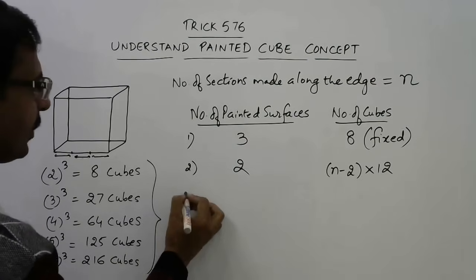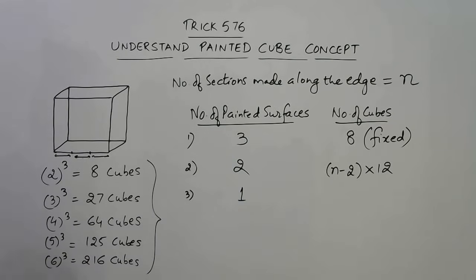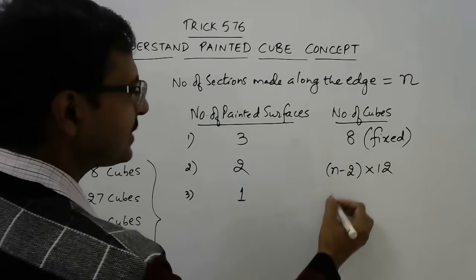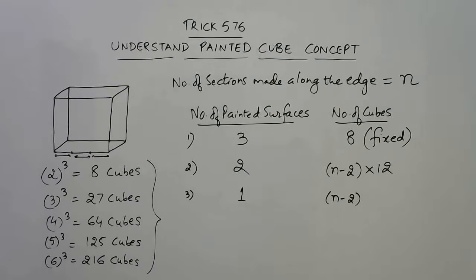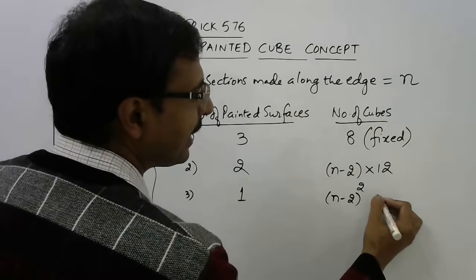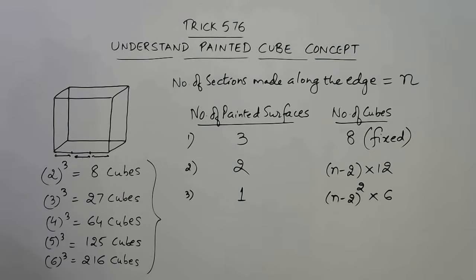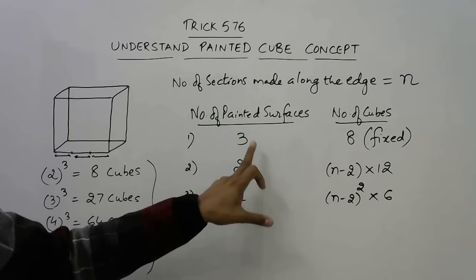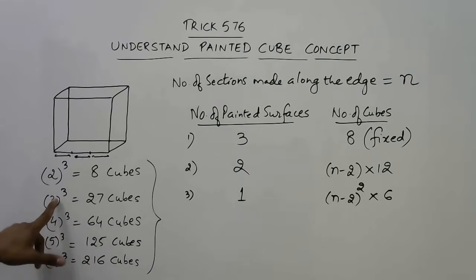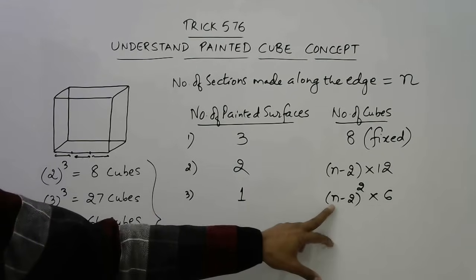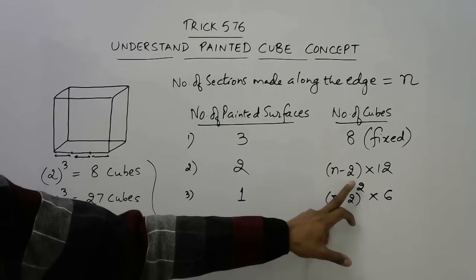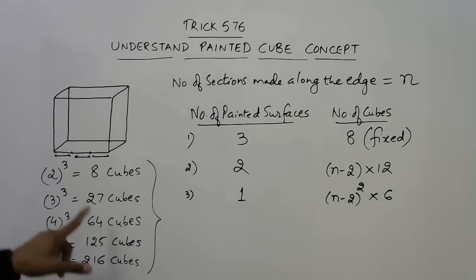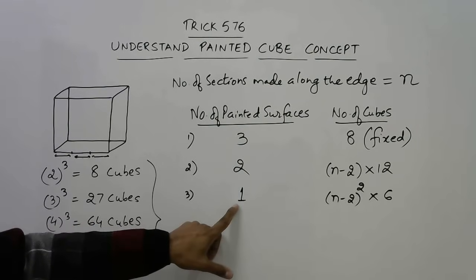For one painted surface, the formula is (n − 2) squared, multiplied by 6. If there are 8 cubes, n equals 2, and you get 0 again because all 8 are corner cubes painted from 3 sides. In the case of 27 cubes, n equals 3: (3 − 2)² × 6 = 1 × 6 = 6. So there will be 6 cubes out of 27 which will have one painted surface.